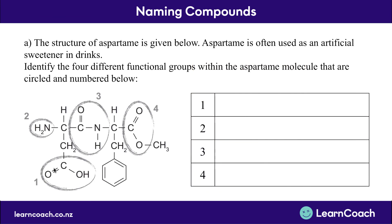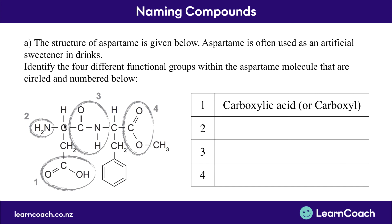Let's look at some questions. For this first question, we've got the structure of aspartame — often used as an artificial sweetener in drinks — and we need to identify four different functional groups circled and numbered and put them in this table. For number one, we can see a C double bonded O and an OH group — a hydroxyl group — so it's a carboxylic acid, also called a carboxyl group. For number two, we've got an NH₂ group. It's tempting to call this an amide, but the carbon does not have a double bonded oxygen attached, so it's actually an amine group. For number three, we've got another NH attached to a carbon with a double bonded oxygen — that's an amide group. For number four, we have a carbon with a double bonded oxygen going to another oxygen which is attached to another chain of carbons — that's an ester.